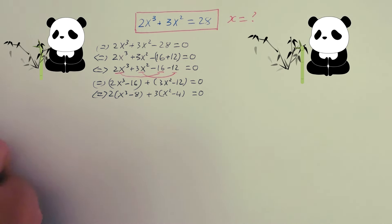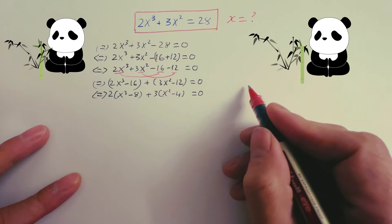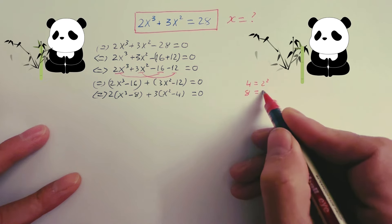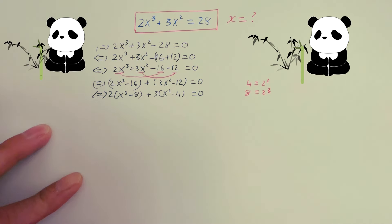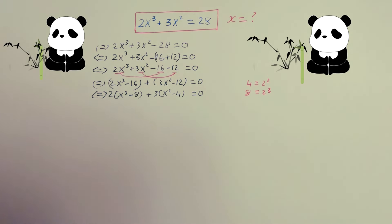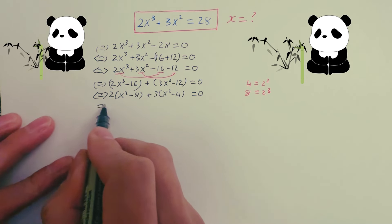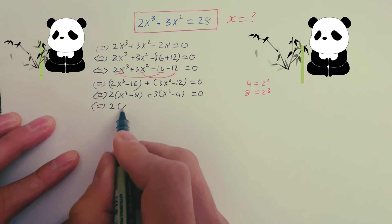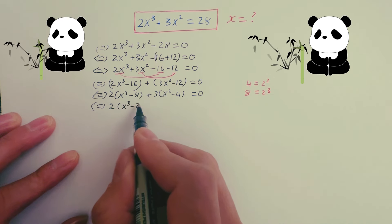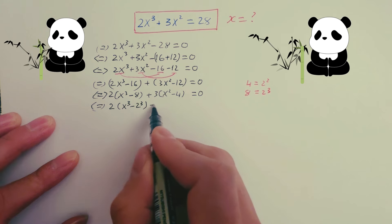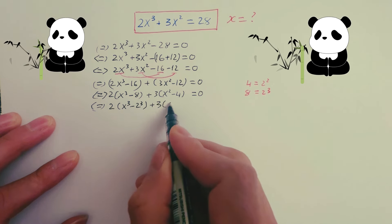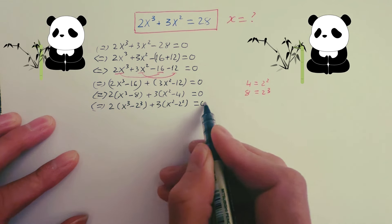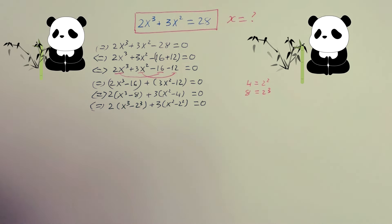Now, do you know that 4 you can rewrite as 2 squared, and 8 you can rewrite as 2 cubed? So you can rewrite the equation as 2 times (x cubed minus 2 cubed) plus 3 times (x squared minus 2 squared) equals zero.